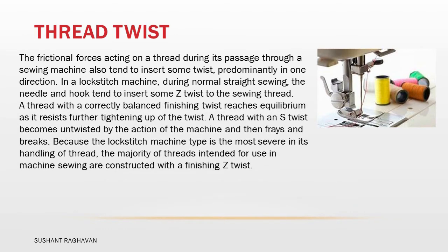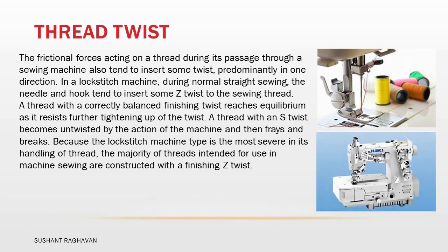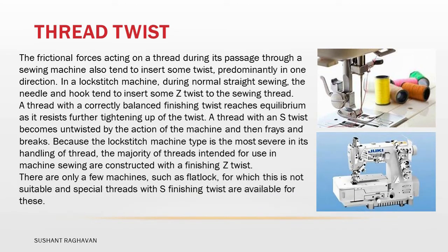A thread with a correctly balanced finishing twist reaches equilibrium as it receives further tightening of the twist. A thread with an S twist becomes untwisted by the action of the machine and then frays and breaks. Because the lock stitch machine type is the most severe in its handling of the thread, the majority of threads intended for use in machine sewing are constructed with a finishing Z twist. There are only a few machines, such as flat lock, for which this is not suitable, and special threads with S finishing twist are available for these.